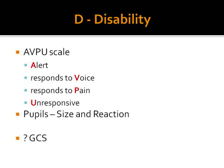We also do a hemogram and hematocrit. The disability assessment, which is rapid, uses the AVPU scale: A stands for alert, V for a patient who responds to voice, P for a patient who responds to pain, and U for the unresponsive patient.